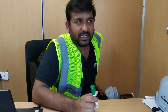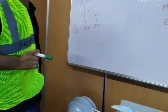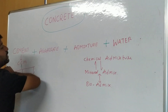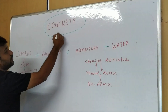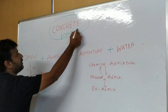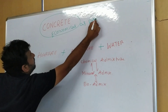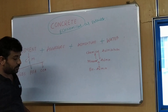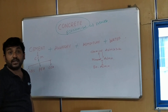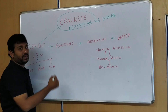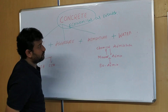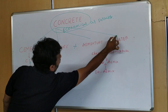I have something that I have written before shooting of this video, so we will go for that. This is the concrete we are talking about, and it should be as economical as possible. Before coming to that point, we have to know what we are adding in it. Basically, it includes cement, aggregate, admixture, and water.